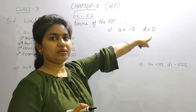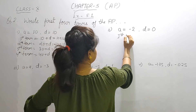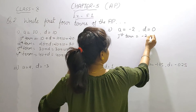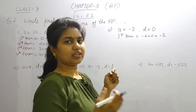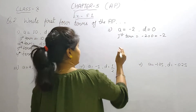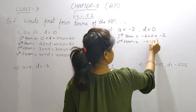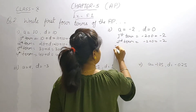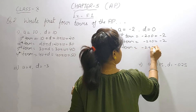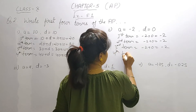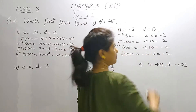Now for the next part: a is minus 2 and the common difference is 0. For the first term: minus 2 plus 0 equals minus 2. For the second term: minus 2 plus 0 equals minus 2. Third term: minus 2 plus 0 equals minus 2. And fourth term: minus 2 plus 0 will also be minus 2. When you add 0 to any number, the value does not change.